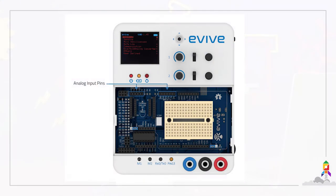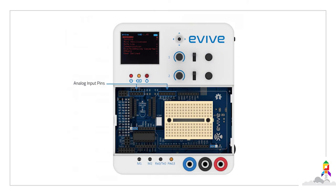To use an LDR, we always have to make a voltage divider circuit. When the value of the resistance of an LDR increases in comparison to the fixed resistance, the value of the voltage across it also increases. We will be using Evive's analog input pin to observe this change.